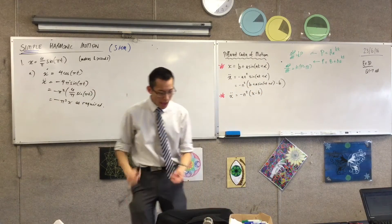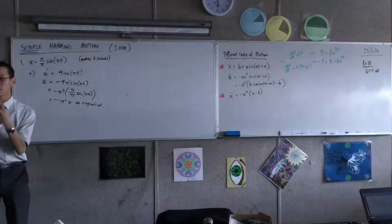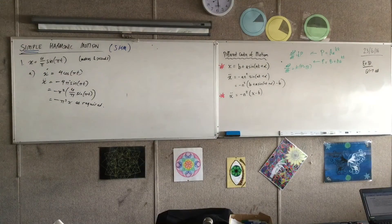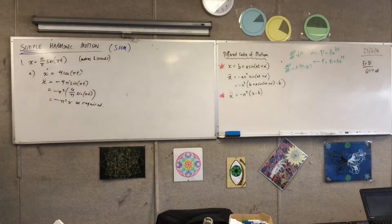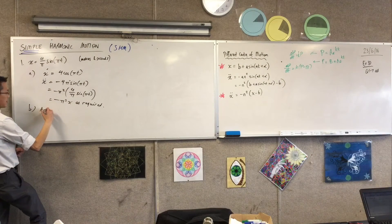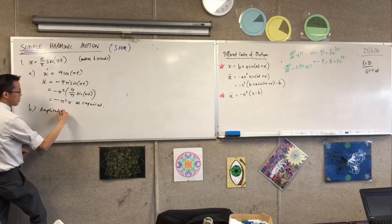Amplitude, period, central motion. Okay, so remember what each of these are. Amplitude. Where does amplitude come from? Where is it defined?